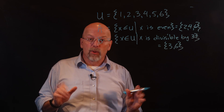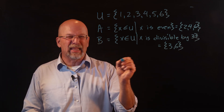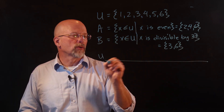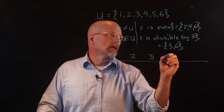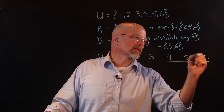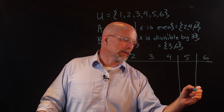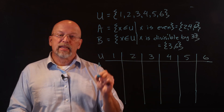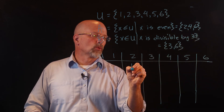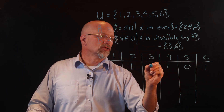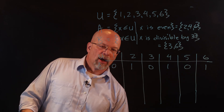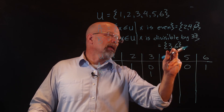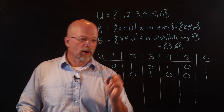So there are our sets. Now how would we represent this in the computer? I'm going to make a little table. We have the elements of the universal set: 1, 2, 3, 4, 5, and 6. A has elements 2, 4, and 6, so it has a one at positions two, four, and six — zeros everywhere else. B has a one in the three column and a one in the six column — zeros everywhere else.